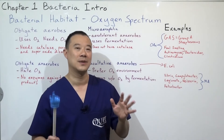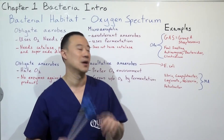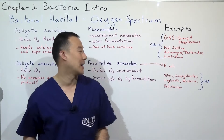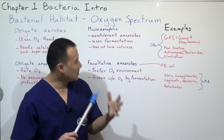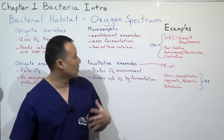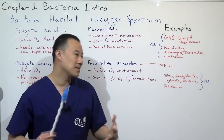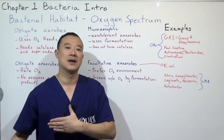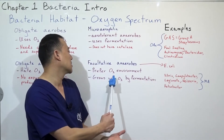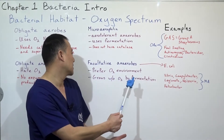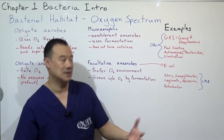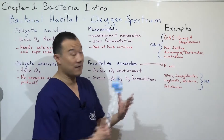For facultative anaerobes, the famous one you'll likely get a question on is E. coli. E. coli is found in the gut, but it also survives outside the gut. It prefers an oxygen environment but can also grow without oxygen in the gut by fermentation.